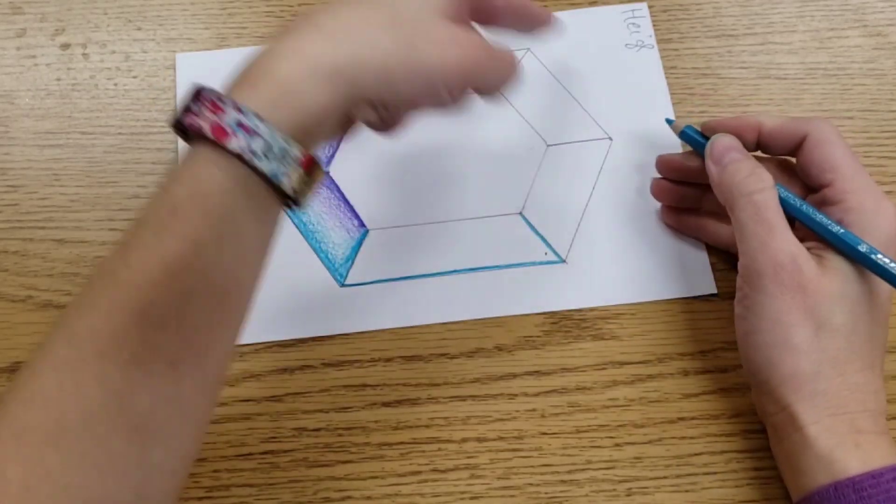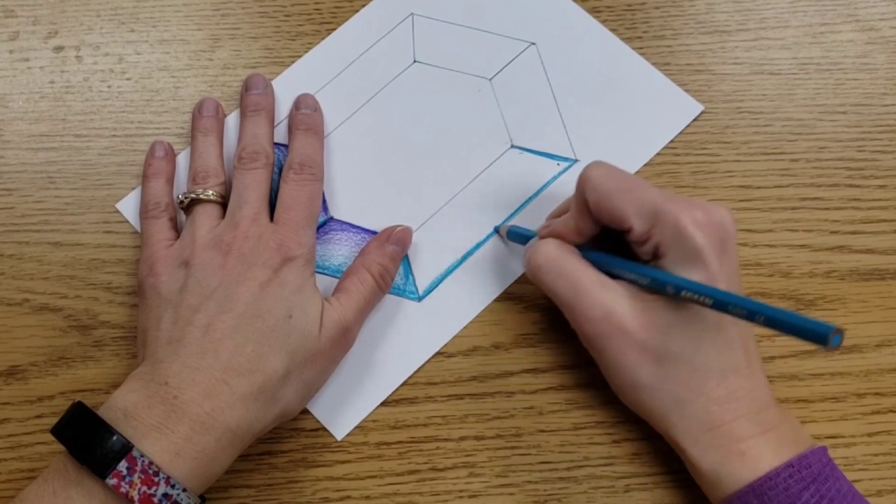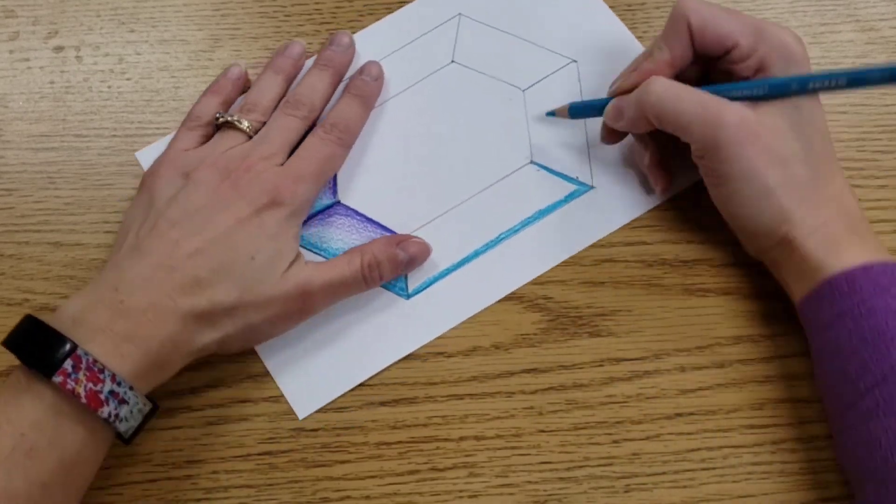And I would continue that all the way around. Keep that consistent. Just turn it as you go and then you won't get confused about what needs to go on what side.